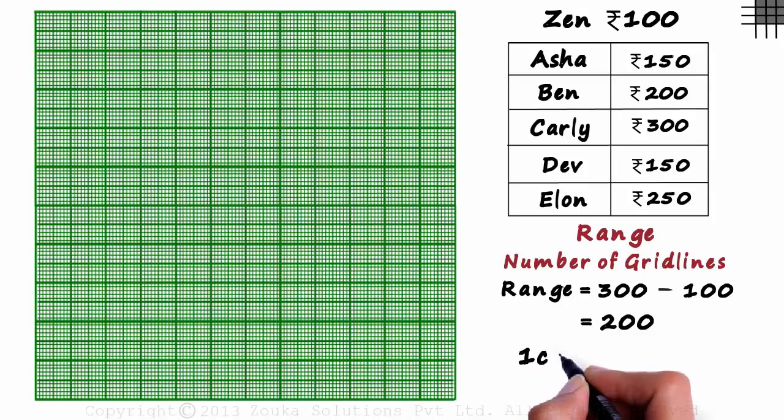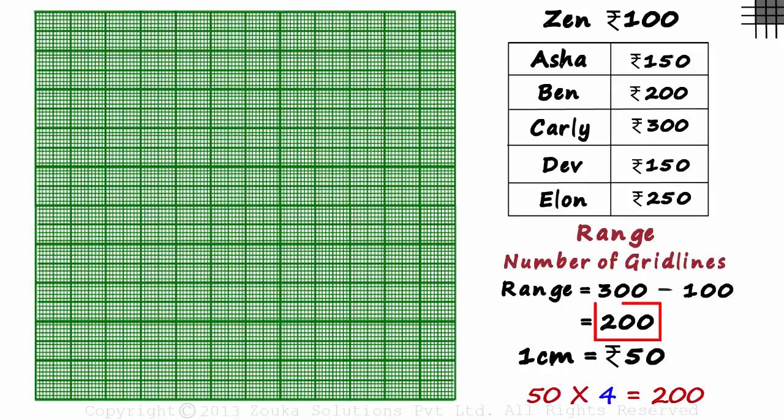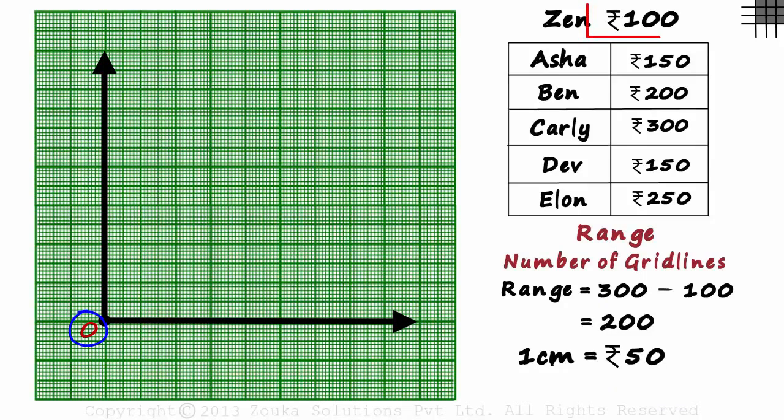Let's say we take 1 centimeter equal to 50 rupees on the y-axis as the scale. It means we will need 4 centimeters to cover this range. Assuming we start the y-axis at 0, we also have to count for the range between 0 and 100. That will be an additional 2 centimeters. It means we will need around 6 grid lines to cover this range of data.